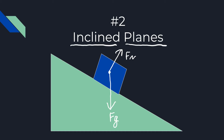Depending on whether there's friction and the direction of motion — let's say it's freely sliding down — so the acceleration or motion is downward, and friction would be opposing that. We draw friction coming up in the opposing direction along the surface.